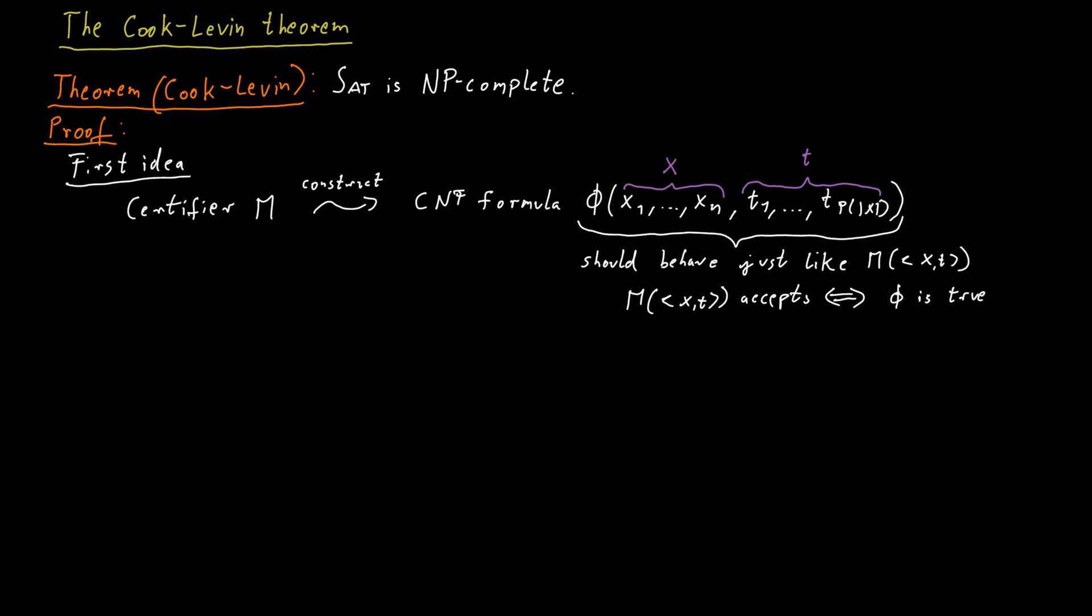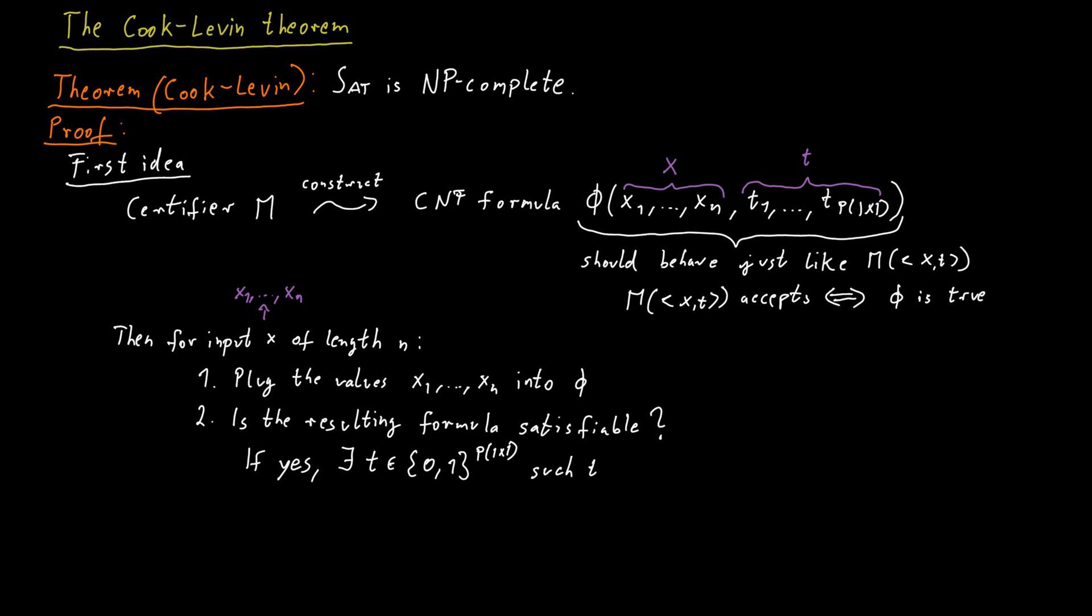If we could manage to construct a formula like this, then our reduction would be done. What we would do is the following. We have X, so we plug in the correct values for all the X variables in the formula. We hardcode this into the formula. But we leave the T variables as free variables that still can be chosen. And then we check whether that formula is satisfiable. If it is, it means there is a possible truth assignment to the T variables such that the formula is satisfied, meaning there is a choice for T such that the certifier accepts the input X, T. And therefore we know that X is in the language.